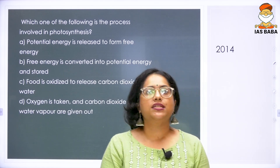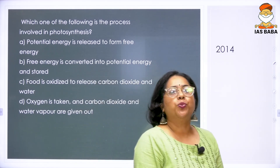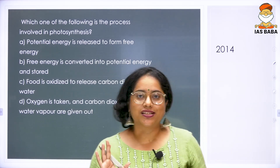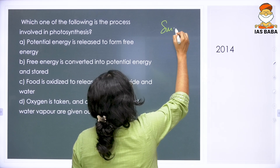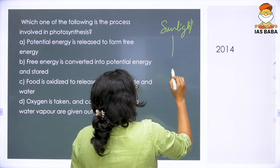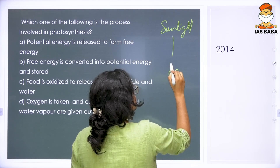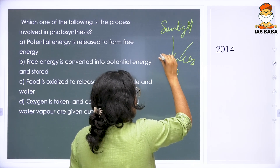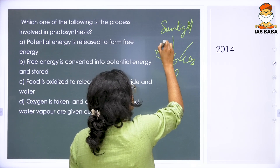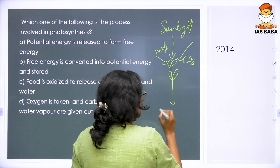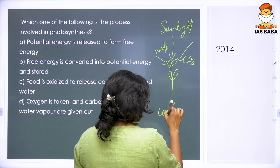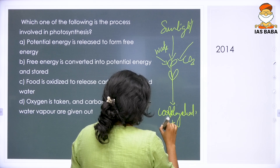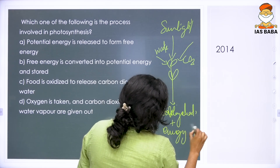The next is a 2014 question: which one of the following is a process involved in photosynthesis? Photosynthesis is basically capturing sunlight by a green plant. There is sunlight, carbon dioxide, and water being taken in, and all of these things are converted into carbohydrates and energy.